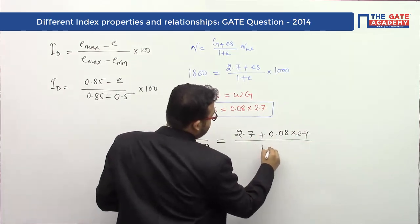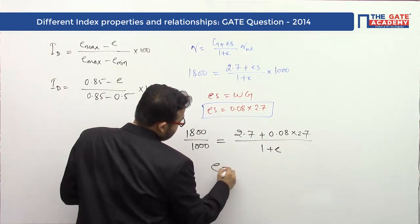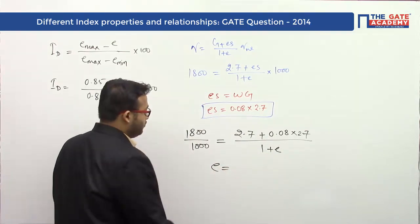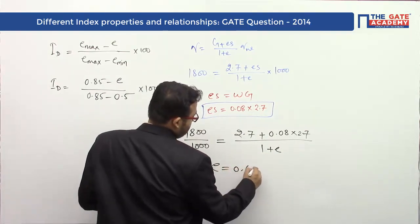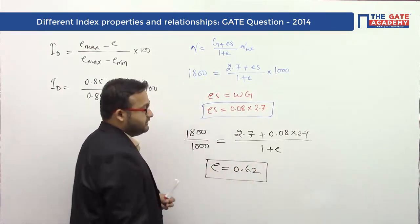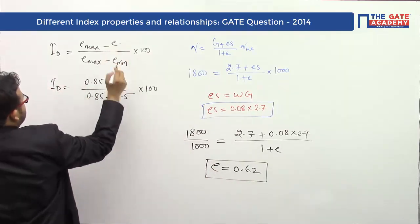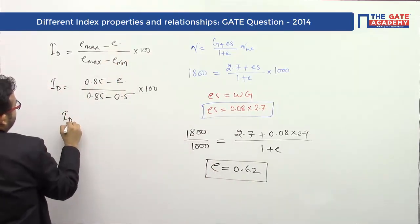From here, if you solve for the value of e, the value of e = 0.62. So you have estimated the value of void ratio. This value of void ratio we can write here in this formula, so the density index can be calculated.